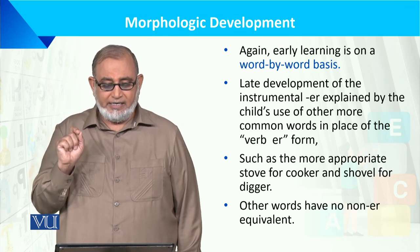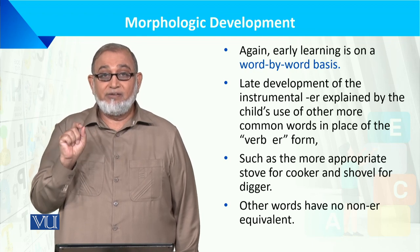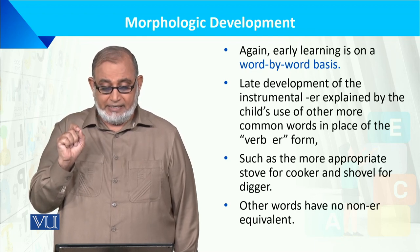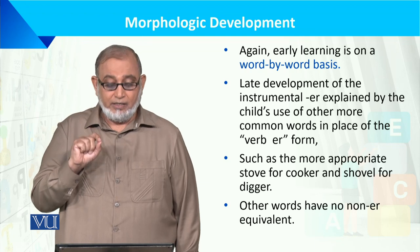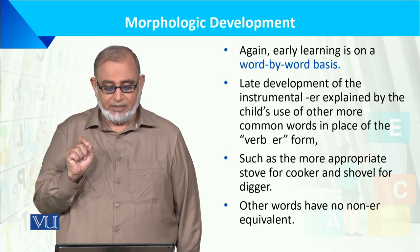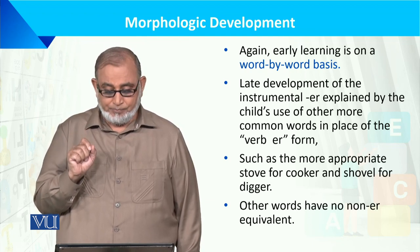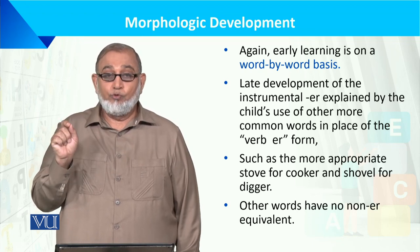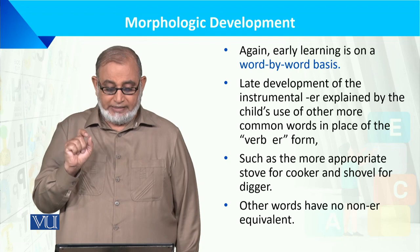Early learning is on a word-by-word basis. The late development of instrumental ER is explained by the child's use of other more common words in place of verb-ER forms — جیسے 'stove' for 'cooker' and 'shovel' for 'digger'۔ اس طرح الفاظ کا better use آتا ہے۔ Other words have no non-ER equivalent.